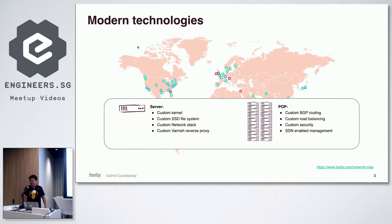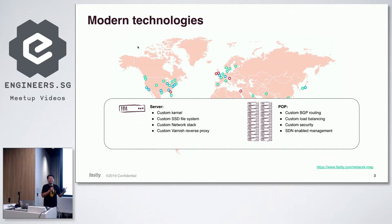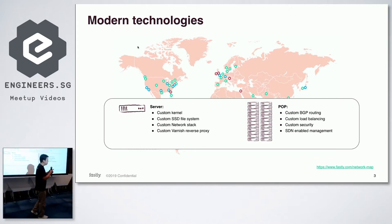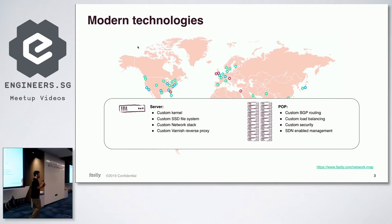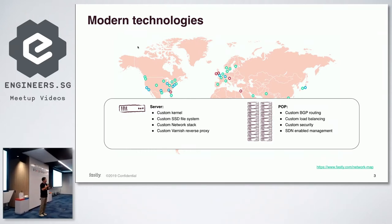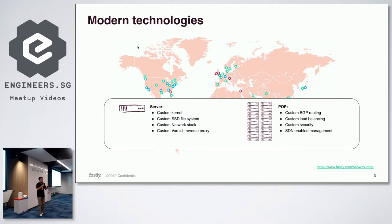Modern servers, instead of using traditional hard disk drives, use SSDs — solid state drives. The advantage of SSDs is very high IOPS and no moving parts. The problem is that SSDs are liable to fail after extensive writes. So Fastly created a custom file system to address that, and over 2011 to 2019 it's been very stable with that new file system.